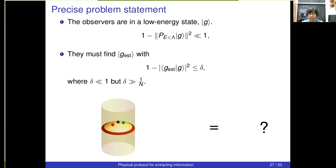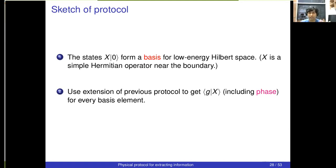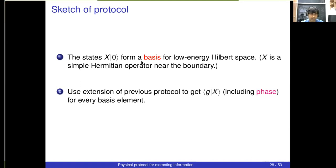Here is how the protocol goes. First point: states obtained by acting with low-energy Hermitian operators near the boundary on the vacuum already form a basis for the low-energy Hilbert space. Second: using an extension of the previous protocol, we can get the overlap of |g⟩ with |X⟩ — I need to explain now how to get not just the mod-squared but also the phase of this overlap. Once I do that, because I have a basis, doing this systematically for every X — every element of the basis — allows me to completely determine the state |g⟩. Knowing the overlap of |g⟩ with every element of a basis completely specifies the state.